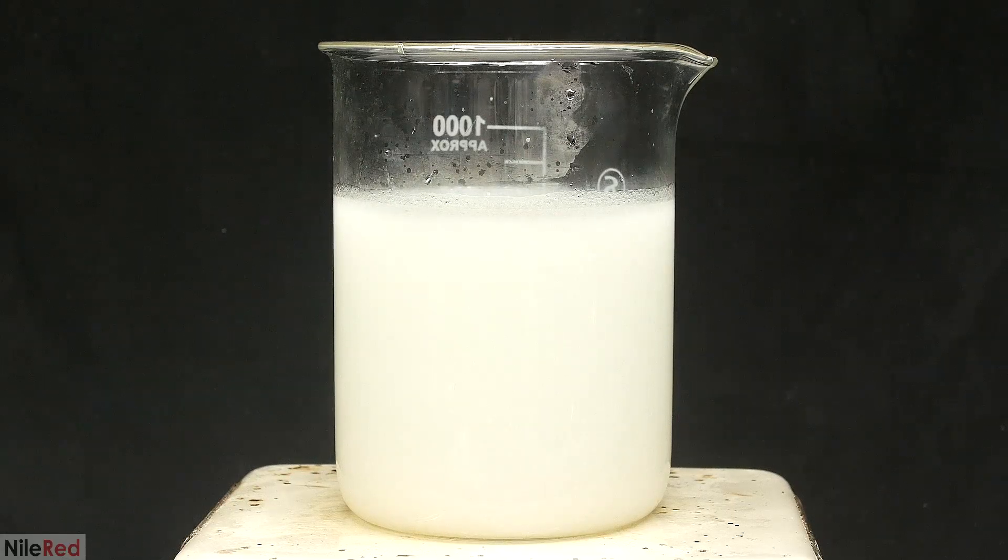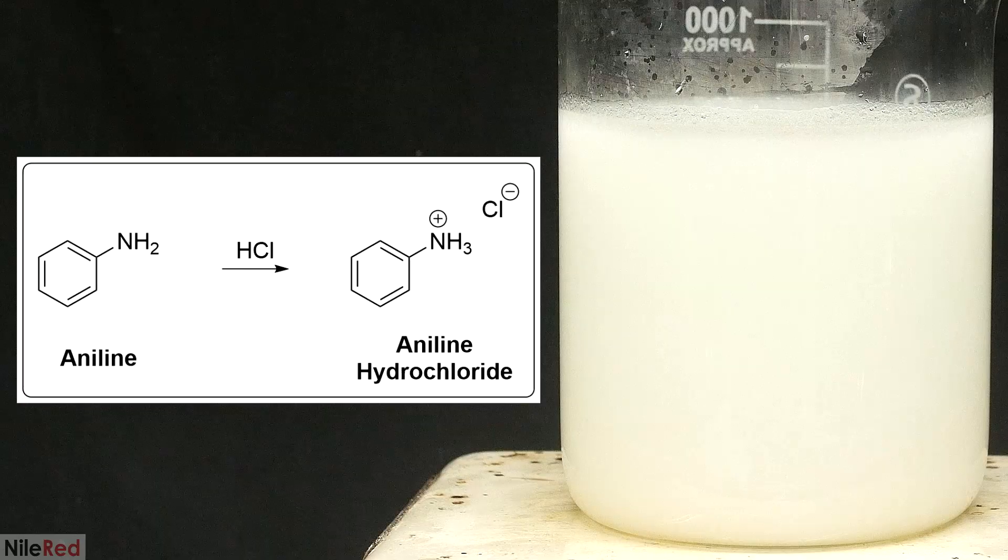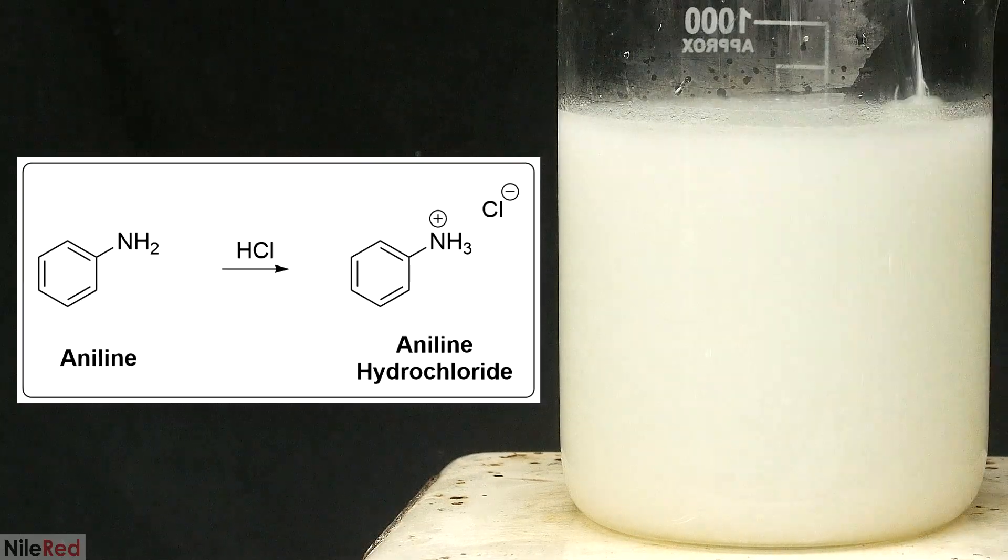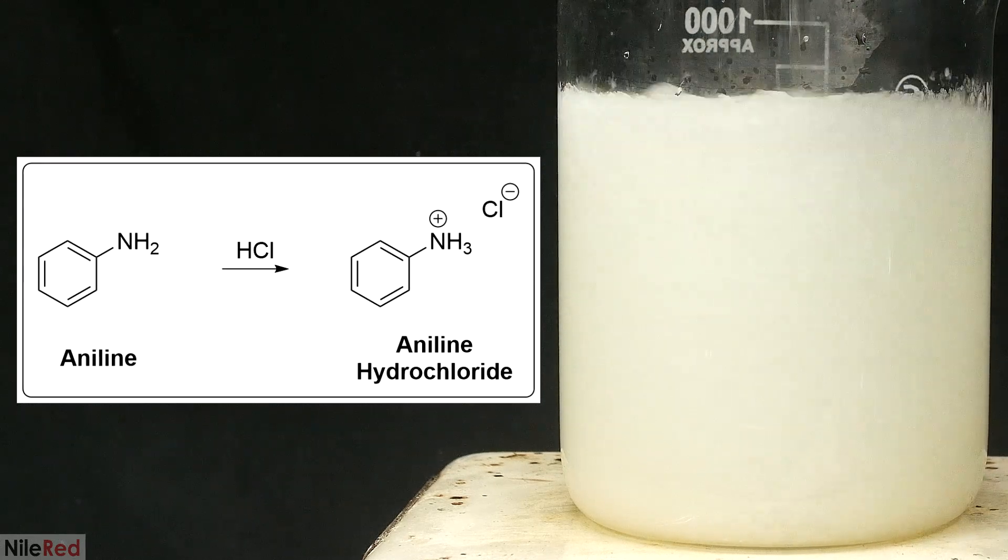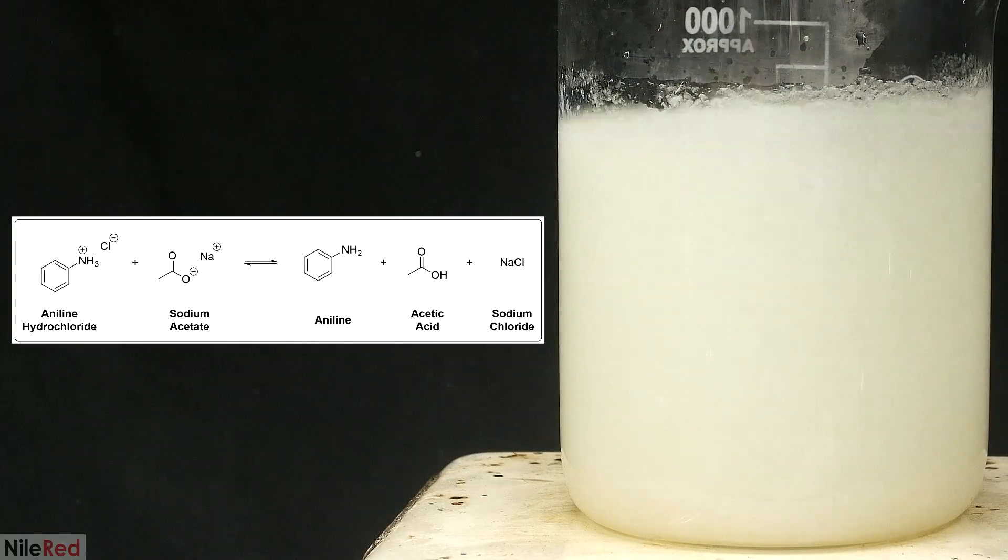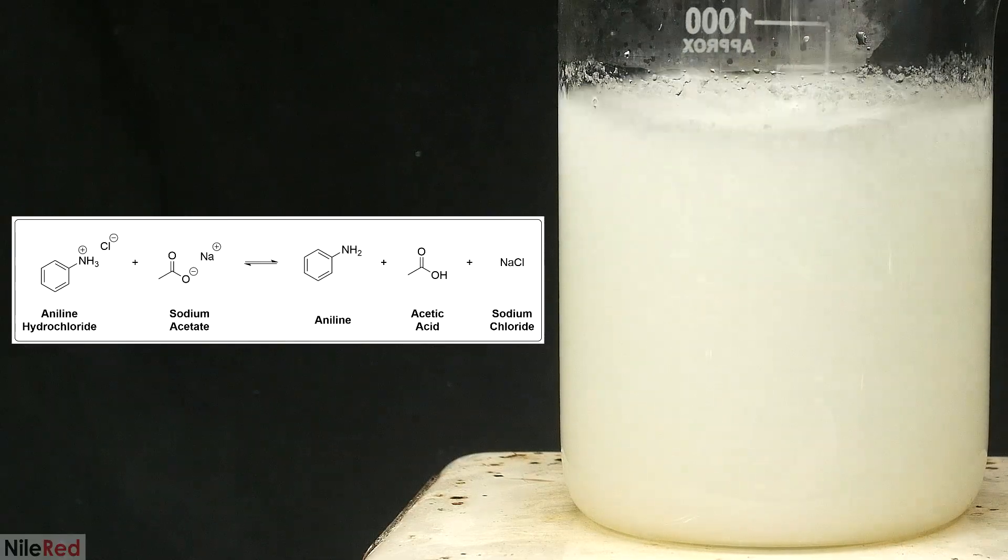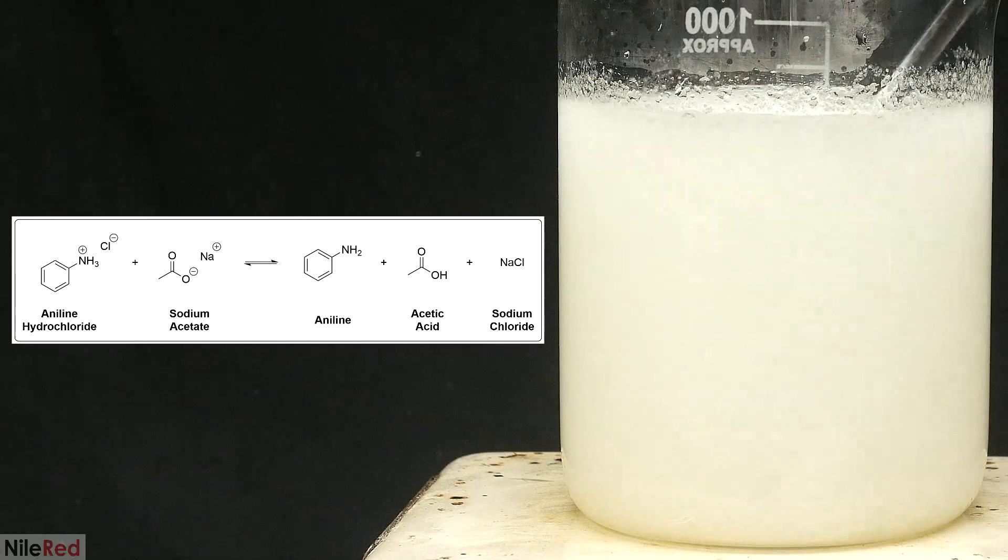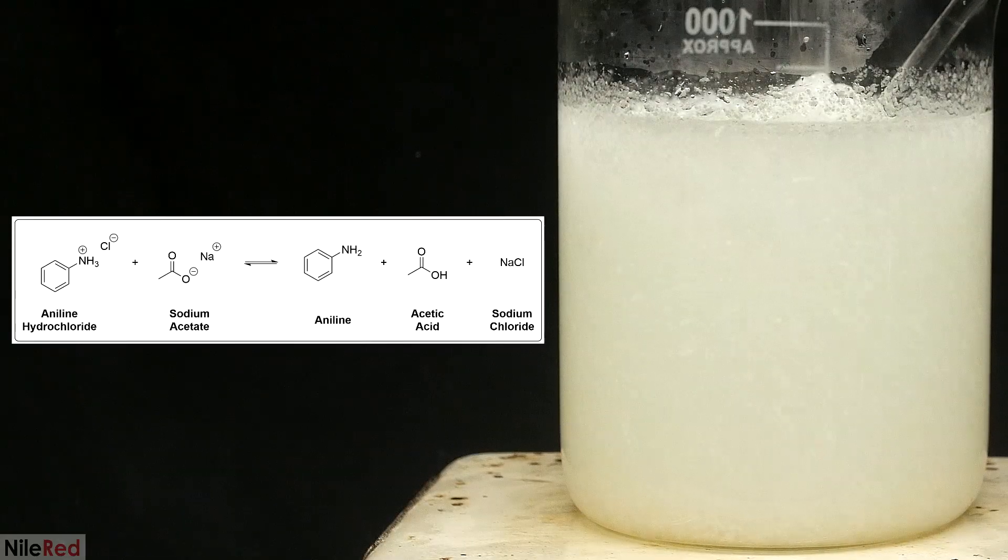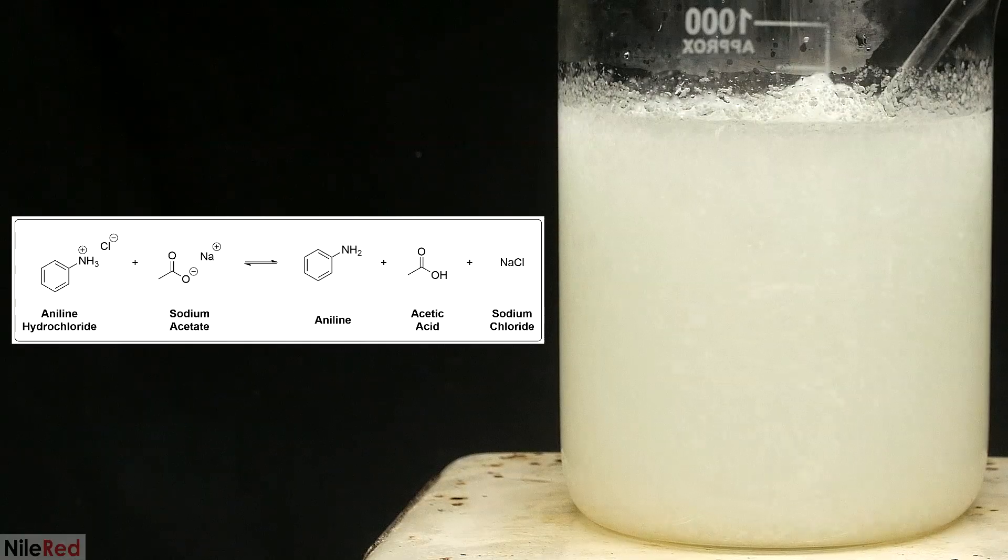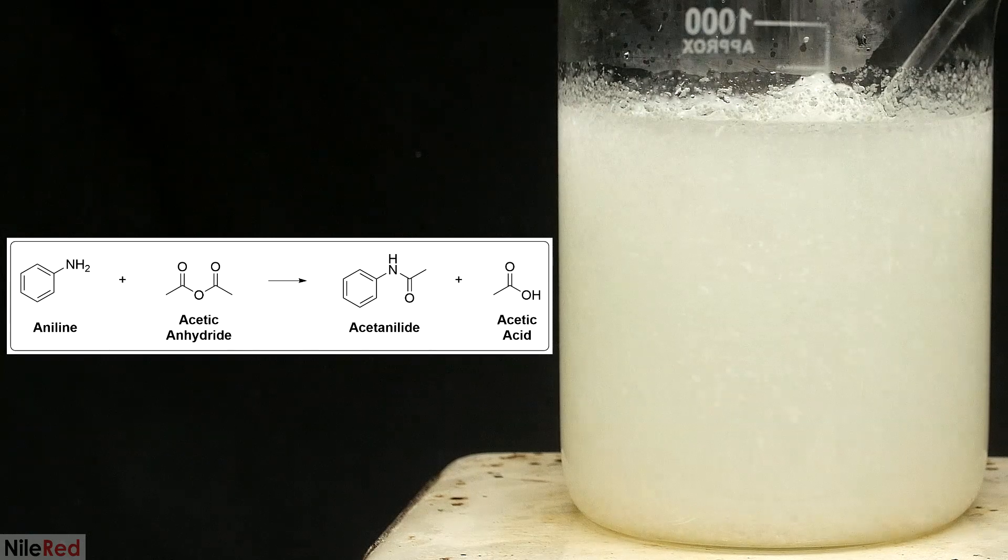Okay, so now to talk about what's going on here. So as I said before, the aniline first reacts with the hydrochloric acid to form aniline hydrochloride. This allows it to dissolve in water, but in this form, it can't react with acetic anhydride. The key step in getting the reaction going is the addition of the sodium acetate. When the sodium acetate is added, it forms an equilibrium reaction with the aniline hydrochloride. The acetate ion can pick up one of the hydrogens on the nitrogen, which leads to the formation of aniline, acetic acid, and sodium chloride.